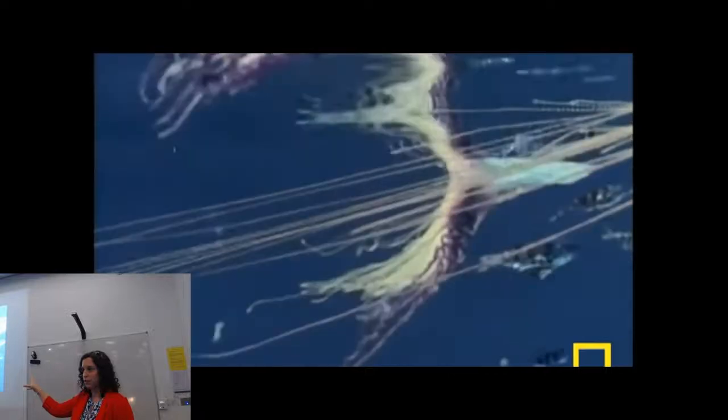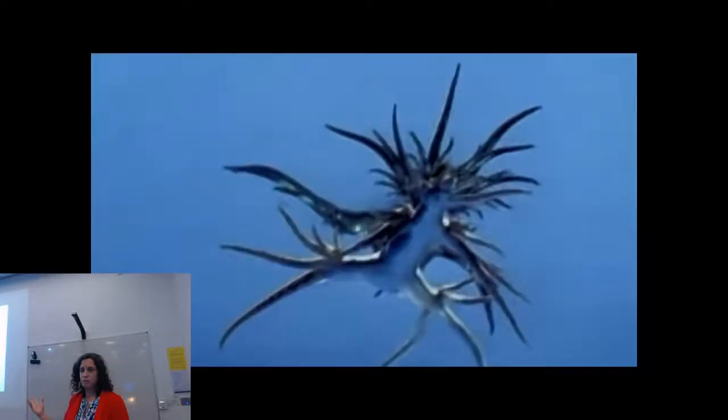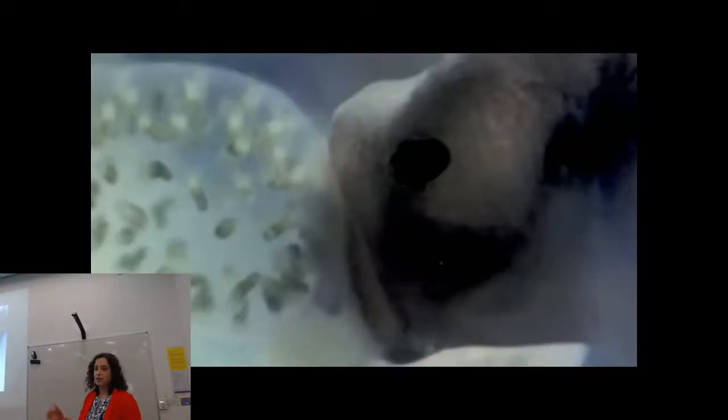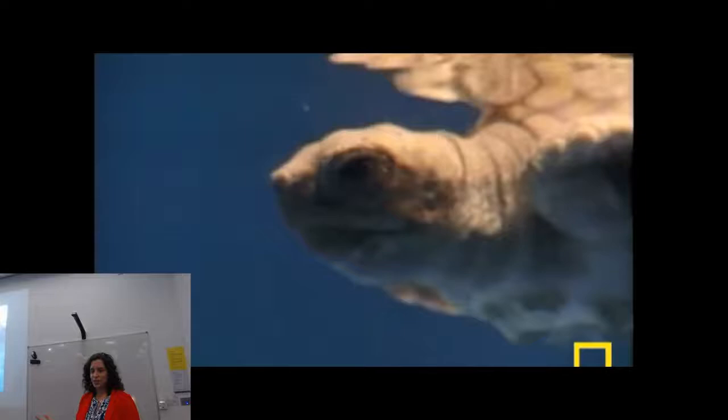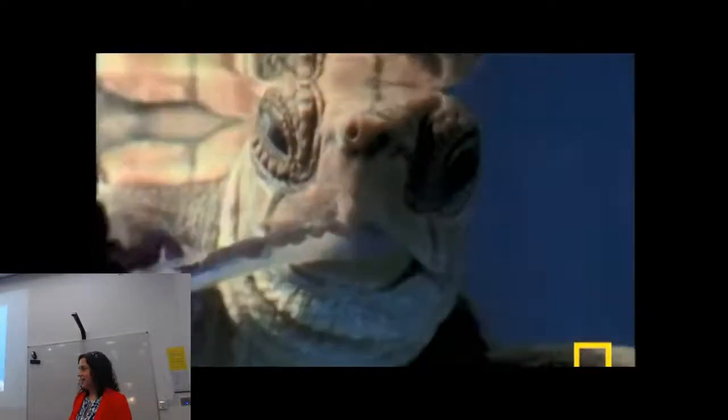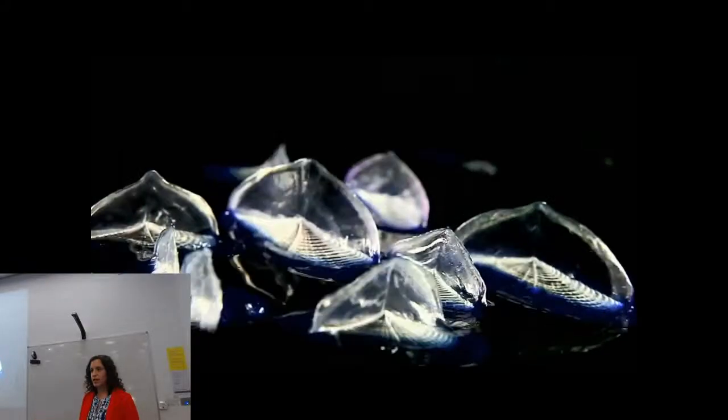Man o' wars and blue buttons are often eaten by the blue sea dragon Glaucus, but they're also eaten by things like turtles. Here's a young turtle checking out a man o' war — these are a great food source for young turtles. We also have Valella, which Dr. Powell will be talking about later — the by-the-wind sailors, which have a little sail that gives them added power to capture the wind.